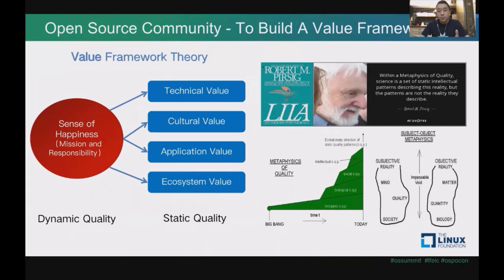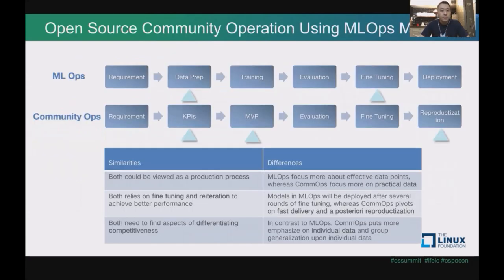Let me start with the general philosophy, or the metaphysics, that we adopt for our line of work regarding open source community operation. In essence, we borrowed a lot from Robert Pirsig's theory of metaphysics of quality. For our day-to-day work, we deployed something very similar to ML Ops, what the data scientists use in AI.